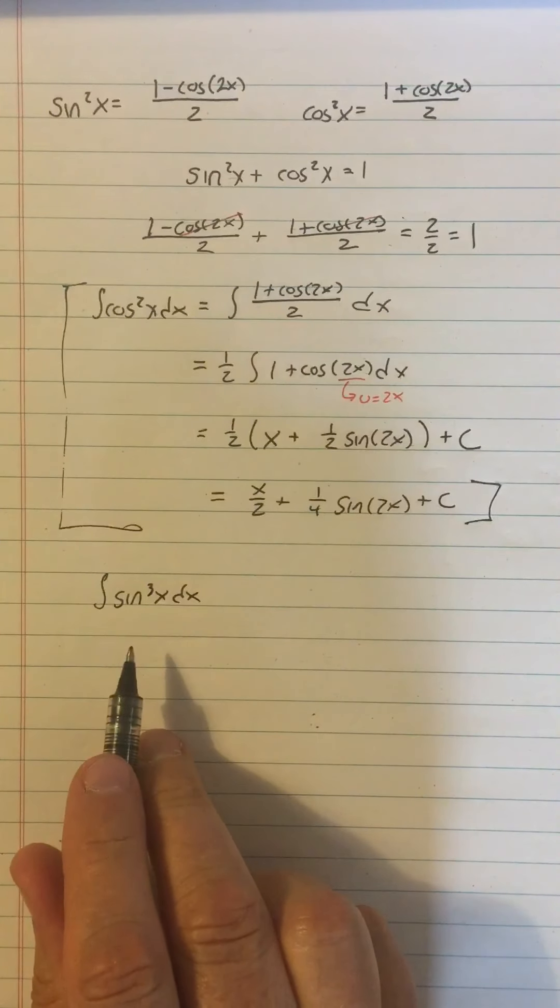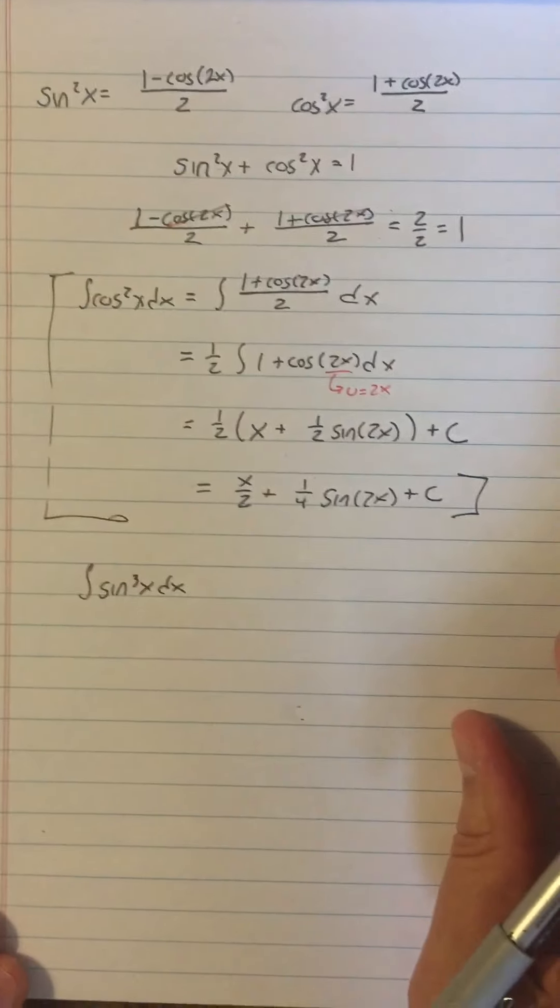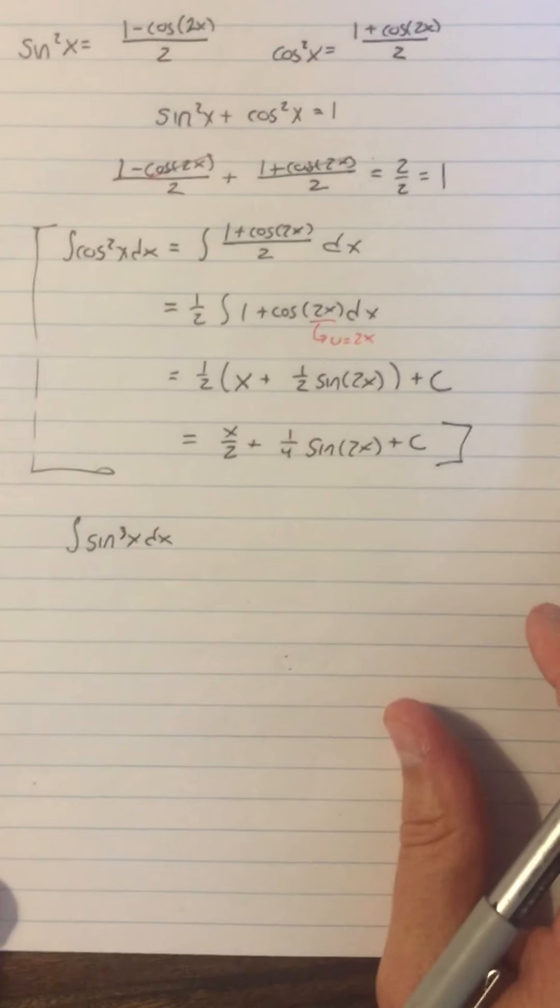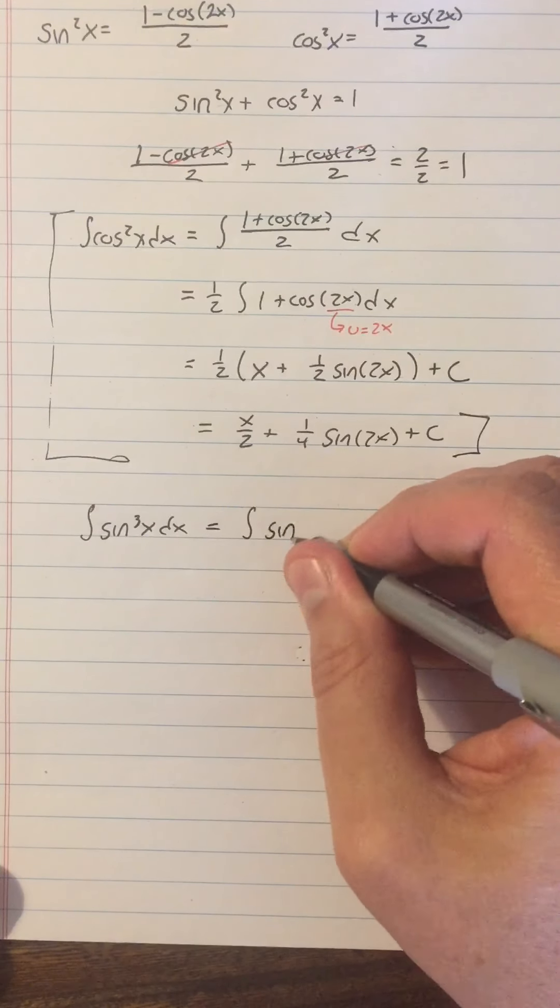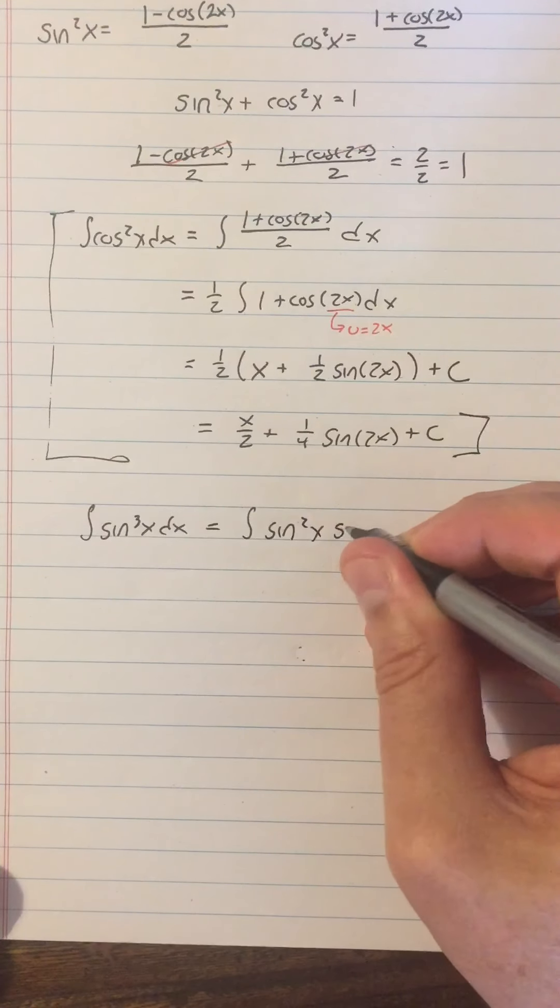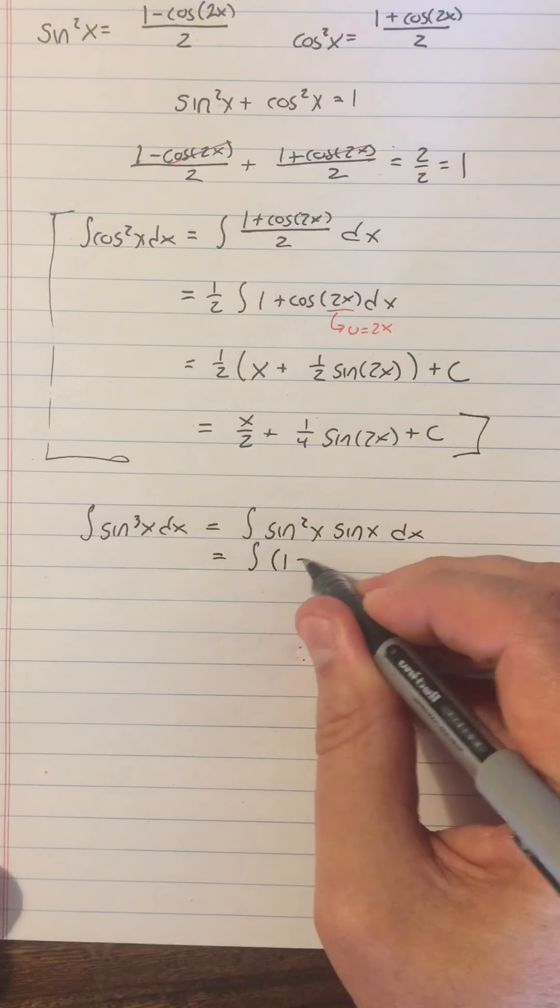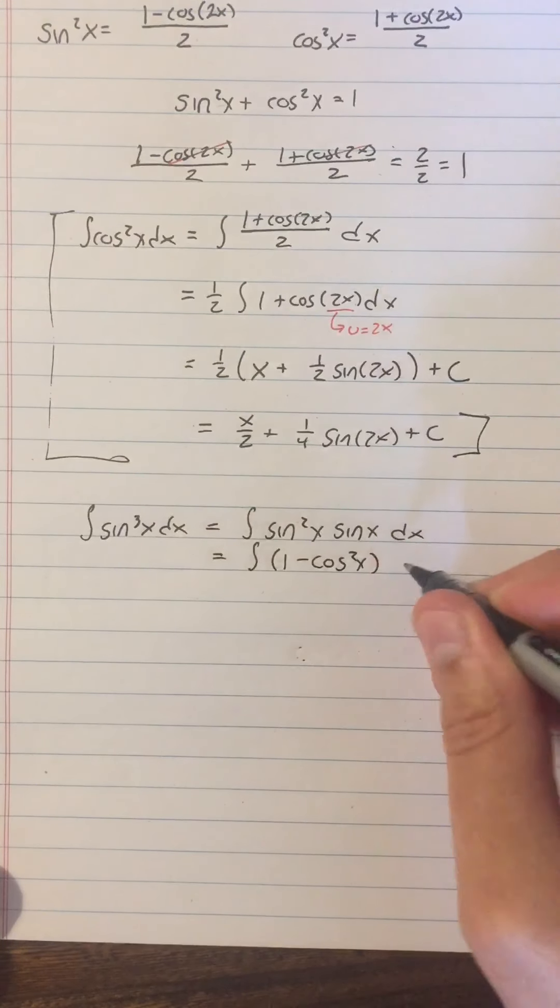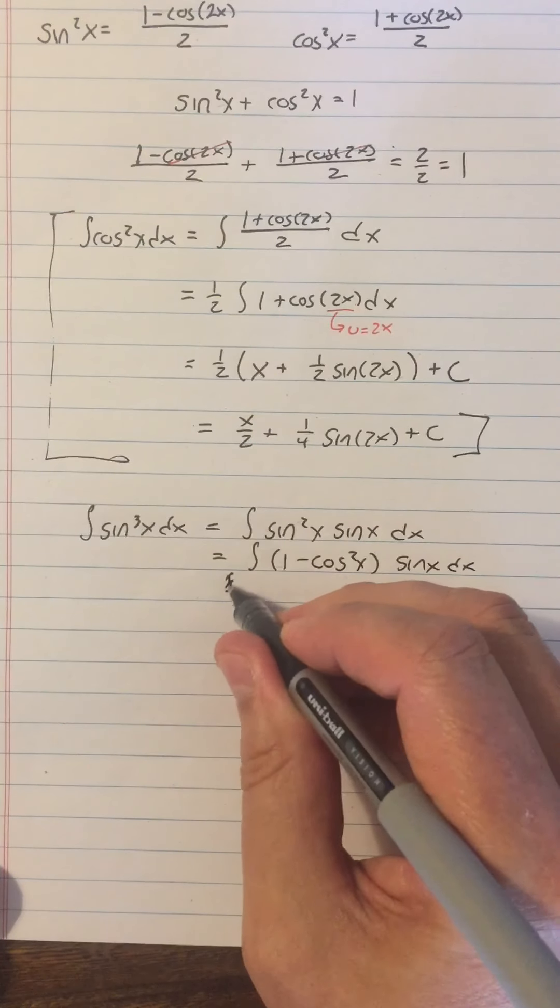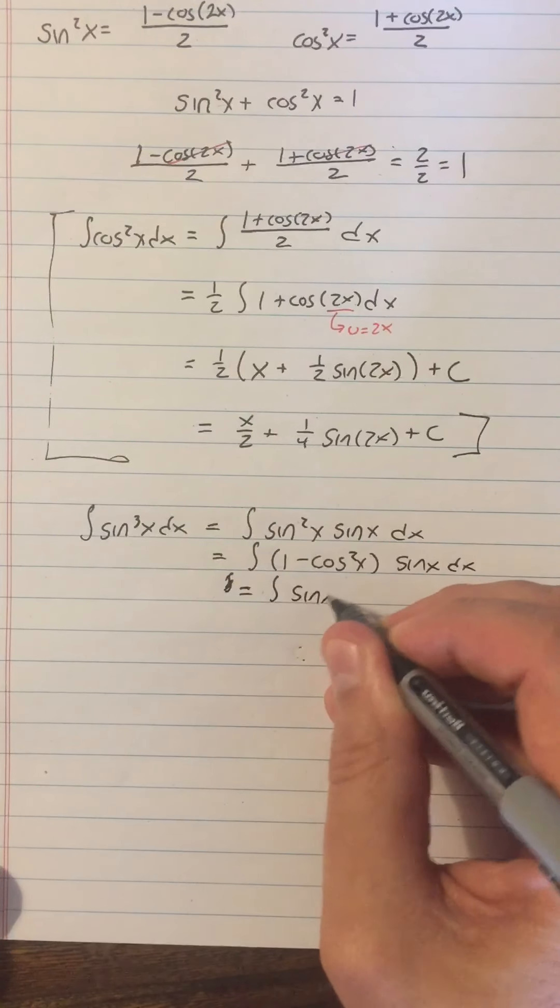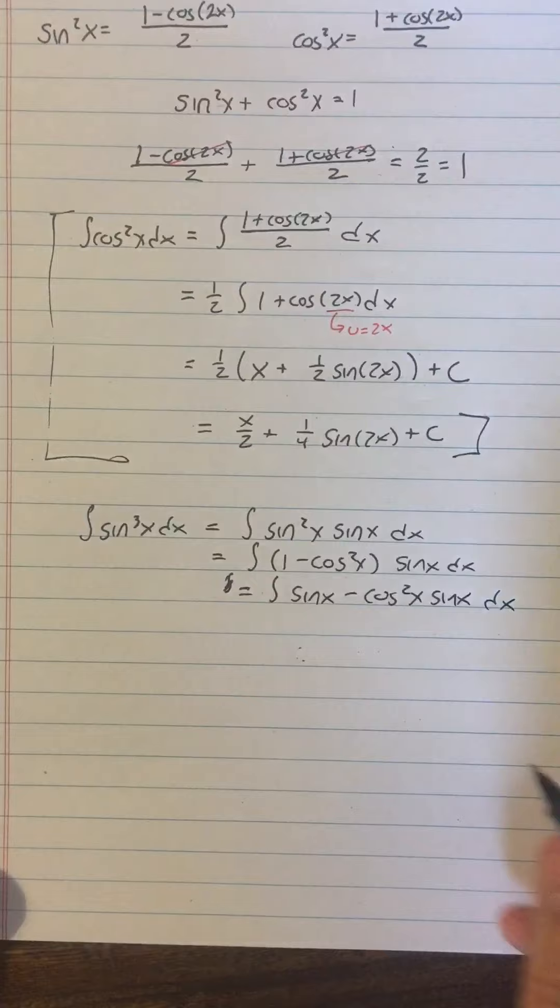All right, well, this one you can rewrite and actually not have to use any of the half angle formulas. So I'll show you how to do that. But it does revolve around identities and all of this is about techniques for integrating this type of function. So what I do is I rewrite this as sine squared x times sine of x. Why would you do that? Well, I'm doing that because the sine squared x that I can write as one minus cosine squared x and then keep the sine x dx. And then I can distribute the sine x equals integral of sine x minus cosine squared x sine x dx.